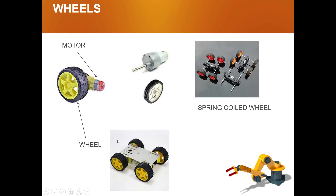Here you can see a motor-controlled wheel system. This pin will go into this hole, and as soon as we apply current, it will start rotating, and then our robot will move in the forward direction. Here you can see four motors connected to four wheels, and this metal part is called the chassis.